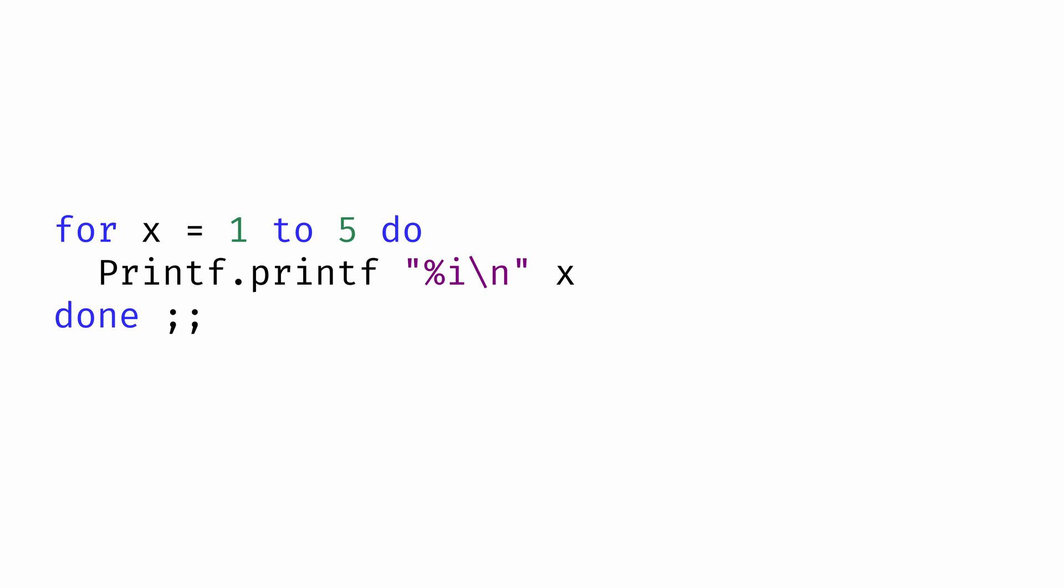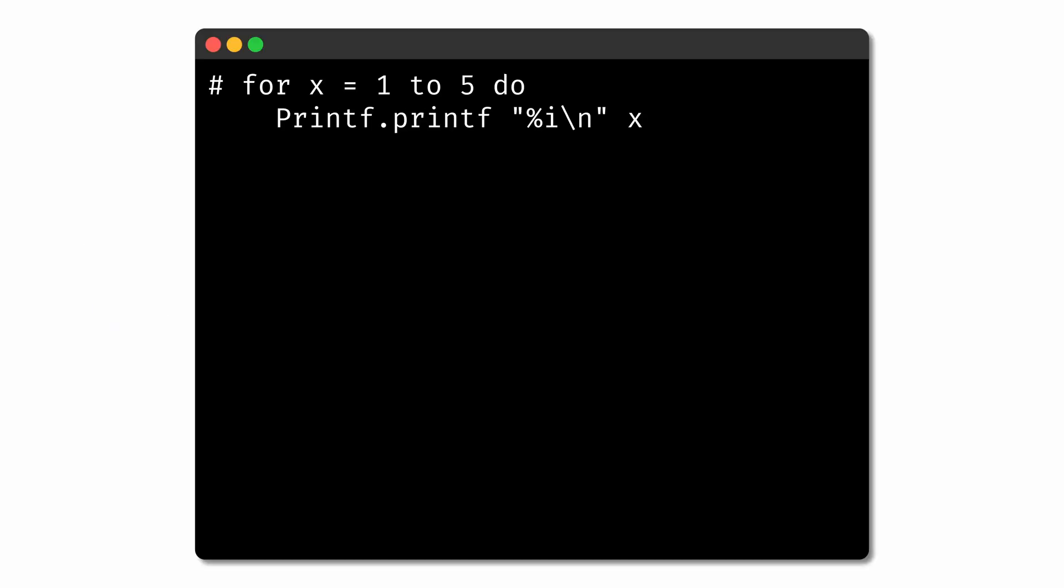In this case, we're choosing to print the variable's value using the printf function. So when the loop runs, we'll get the values 1 through 5 printed in a loop.